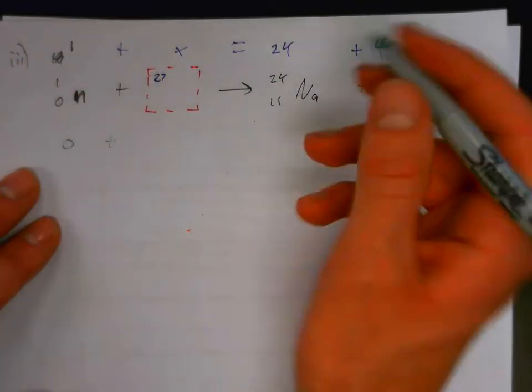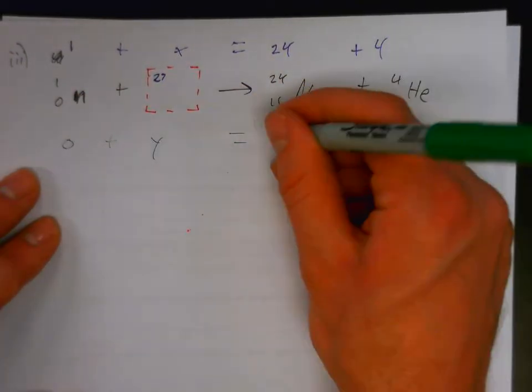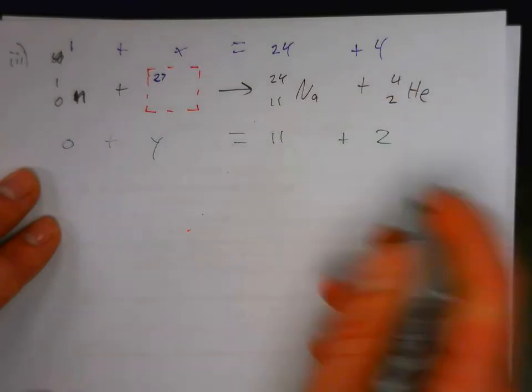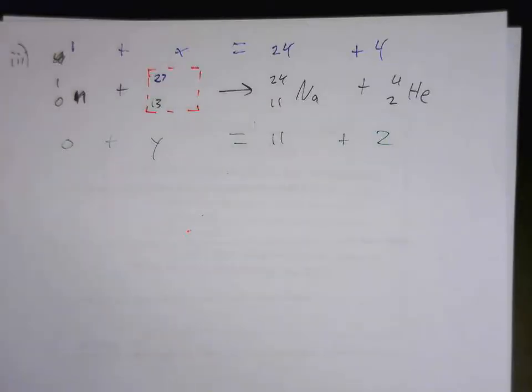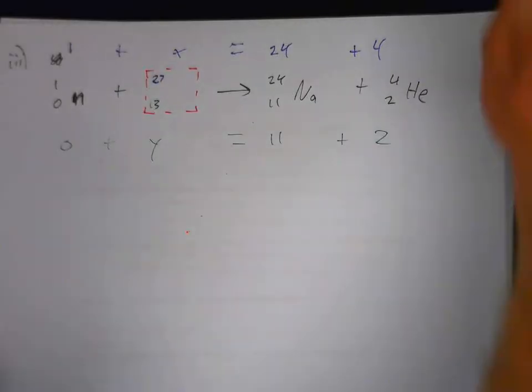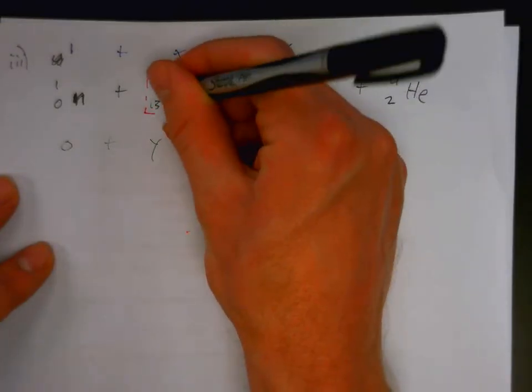Looking at the element with atomic number 13, that's aluminum. So the answer is 27 over 13 aluminum.